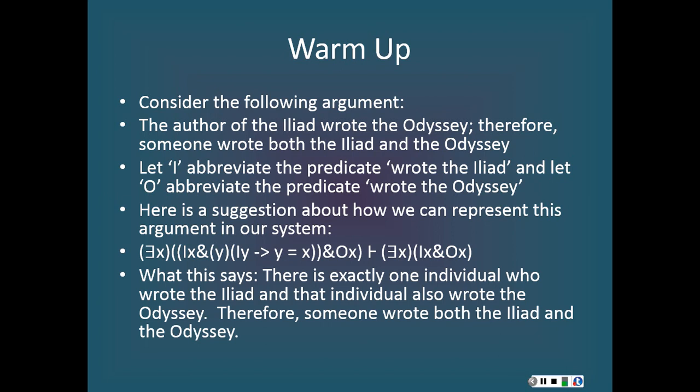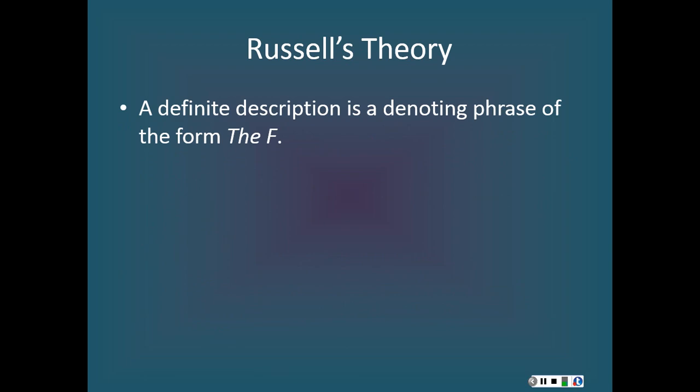What this says is that there is exactly one individual who wrote the Iliad, and that individual also wrote the Odyssey. Therefore, someone wrote both the Iliad and the Odyssey. Notice how we translated the claim that the author of the Iliad wrote the Odyssey — as the claim that there is exactly one individual who wrote the Iliad, and that individual also wrote the Odyssey. In translating that sentence this way, we were making use of a theory of definite description given to us by Bertrand Russell. A definite description is a denoting phrase, or at least an apparently denoting phrase, of the form 'the F.'